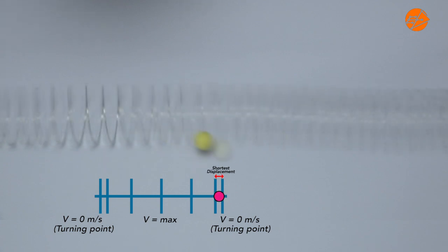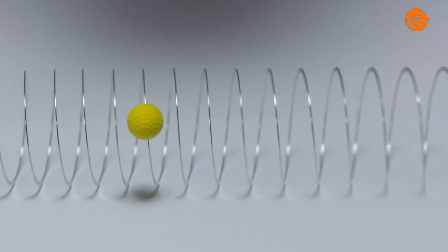As you can see, the displacement traveled per unit time decreases as it reaches the turning point. And as the particle moves towards the next turning point, the displacement traveled per unit time also decreases. Hence, the particle is momentarily at rest at the turning points and moving at maximum velocity at the equilibrium position.